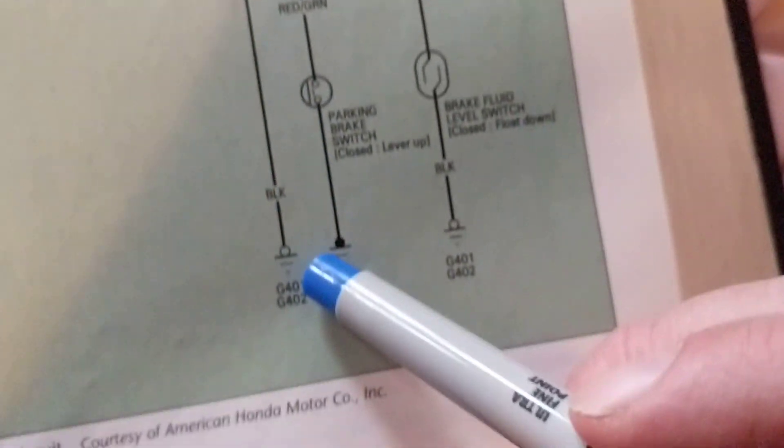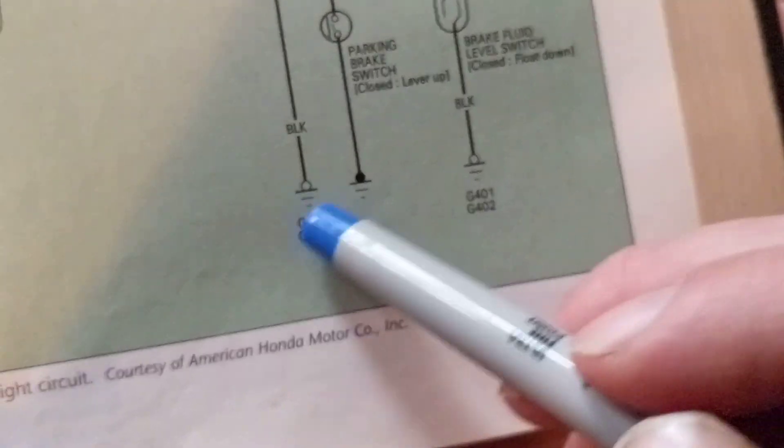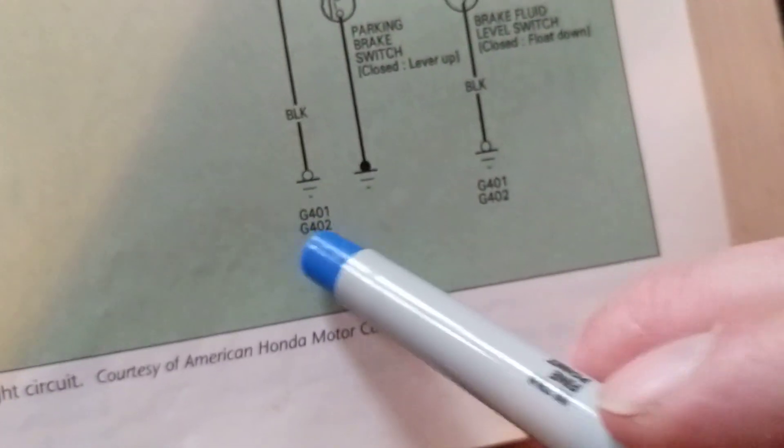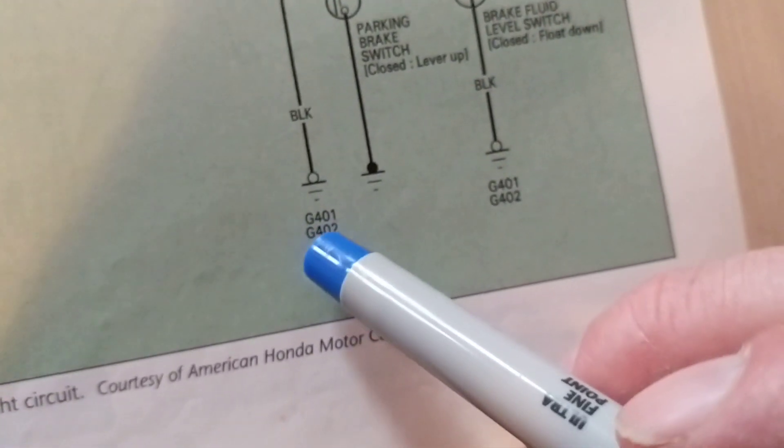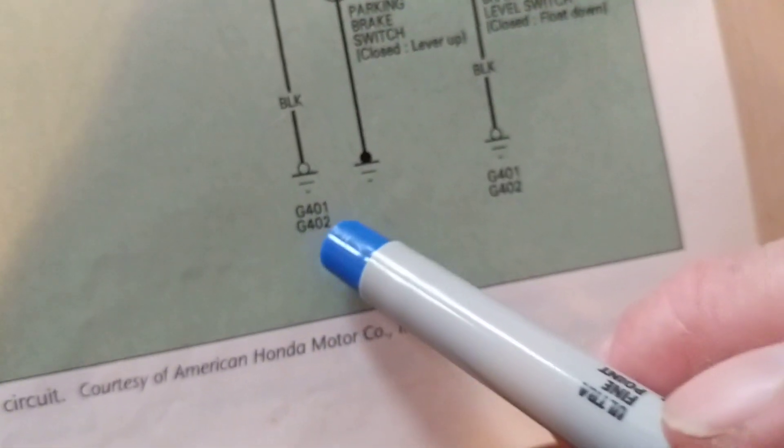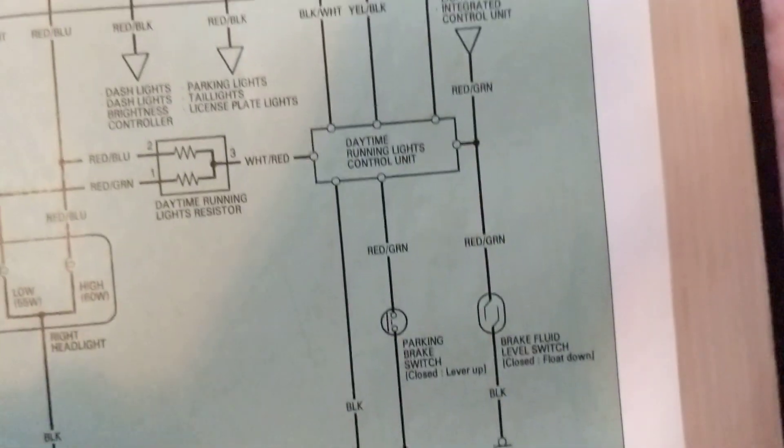This also goes to ground through a black wire, and there are locations in the diagrams to show you where these specific points are. G401, G402 - it gives you where these points are for ground.